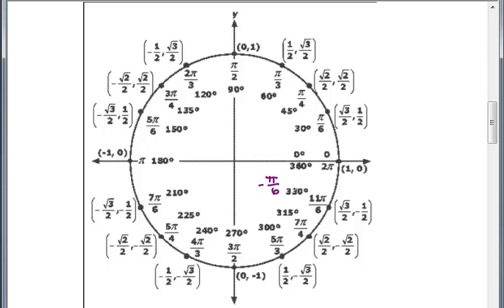And 7π over 4 is coterminal with negative π over 4, and 5π over 3 is coterminal with negative π over 3, and 3π over 2 is coterminal with negative π over 2.